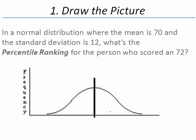For our question, we are asked, in a normal distribution where the mean is 70 and the standard deviation is 12, what is the percentile ranking for the person who scored a 72?